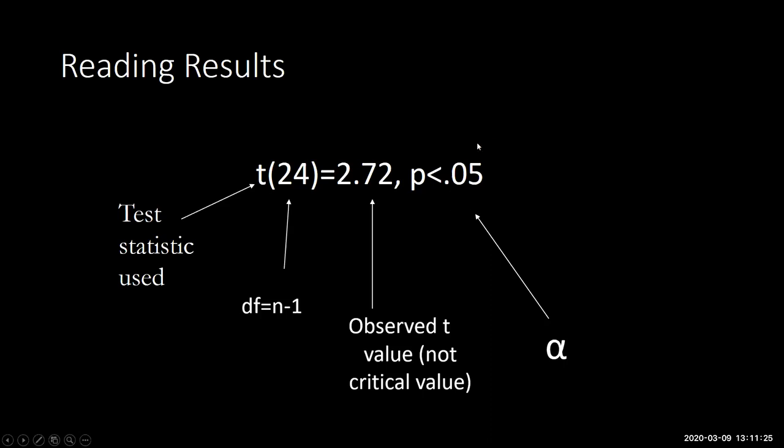So they tell you exactly how small you could have set alpha to so that you can be a little bit more informative to the people who are reading your paper. And so it's far more impressive to see a p value of 0.001 than it would be to see a p value of 0.02.